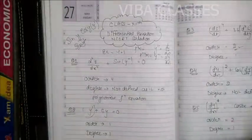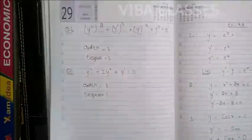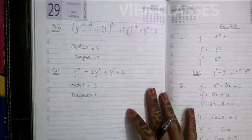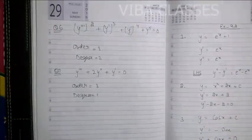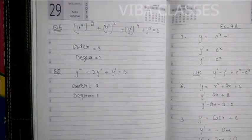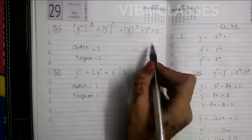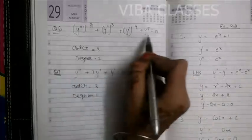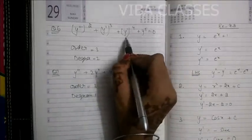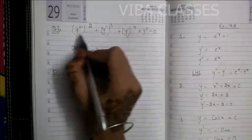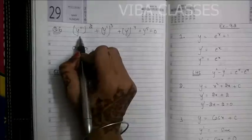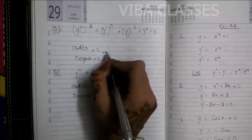I hope that is clear. Next, question number 6: y''' squared, y'' cubed, y' to the power 4, and y to the power 5, equal to zero. The maximum order derivative here is y''' which is the third order derivative, so the order is 3.